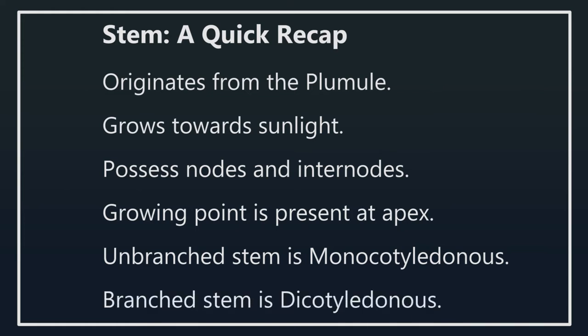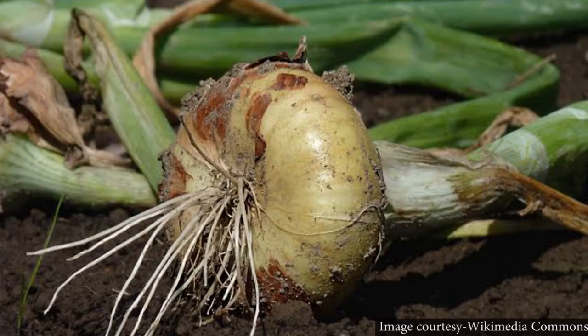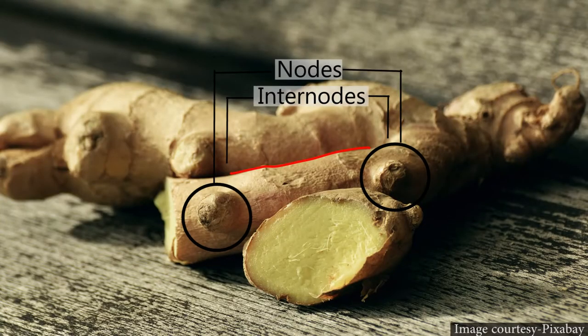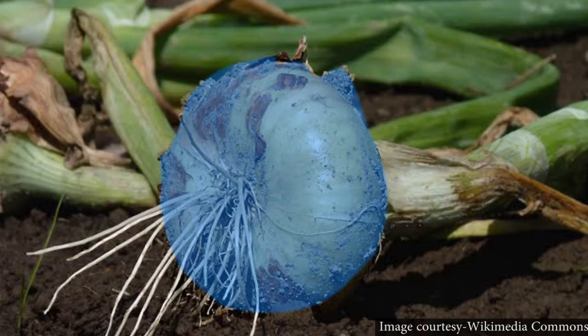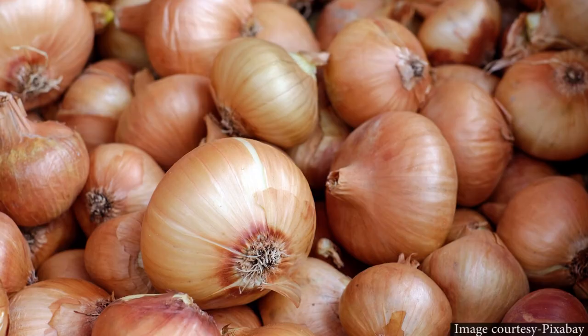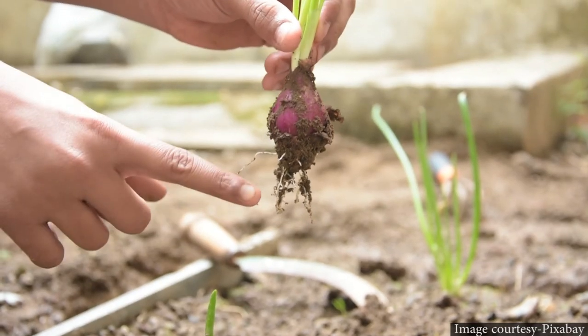Stems may be of different shapes and sizes — some familiar examples are ginger, potato, and onion. These are all stems but they grow underground. In ginger, you can see nodes and internodes on the stem. Potato also grows from the tip of a branch — sprouted potatoes are proof that it is a stem. Onion has a bulb shape, and its stem is like a flat disc from which roots originate.